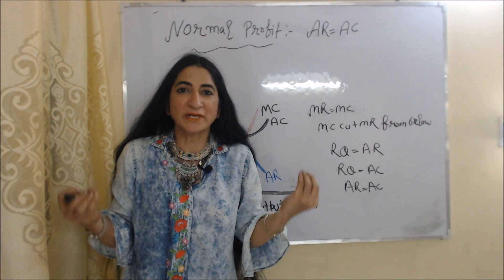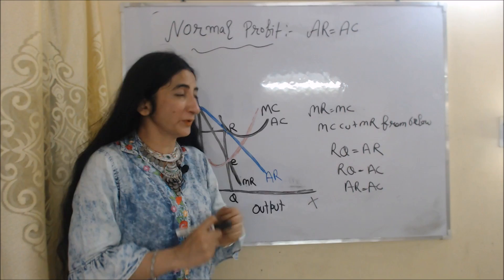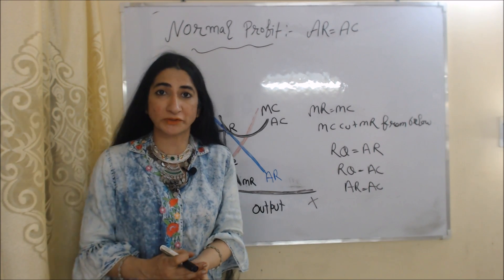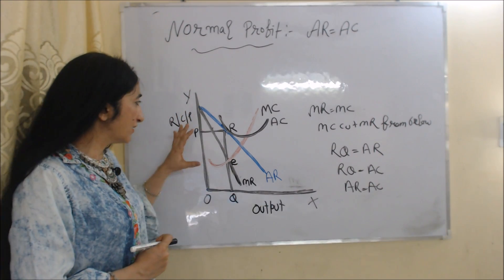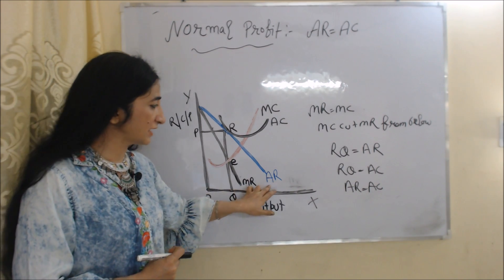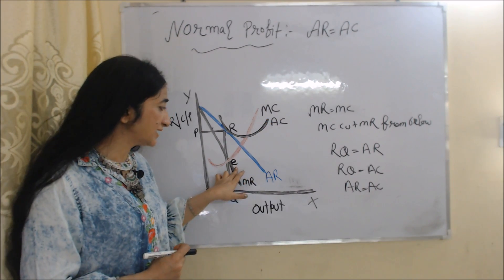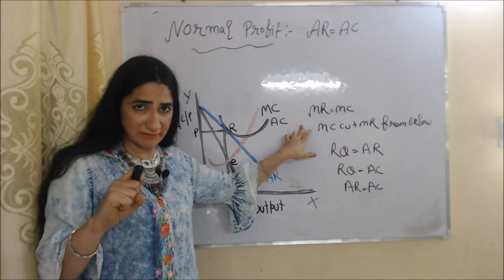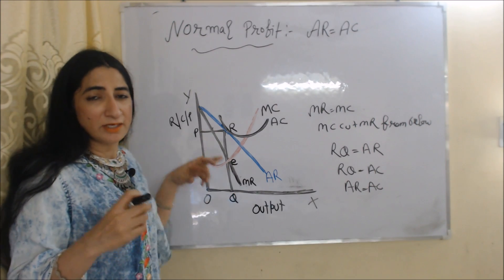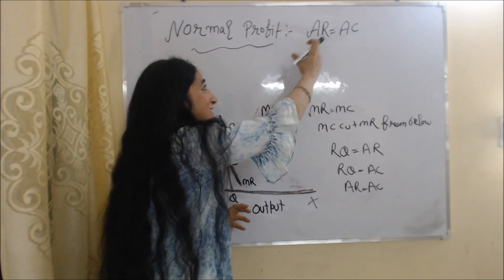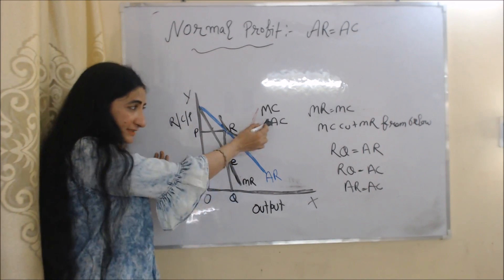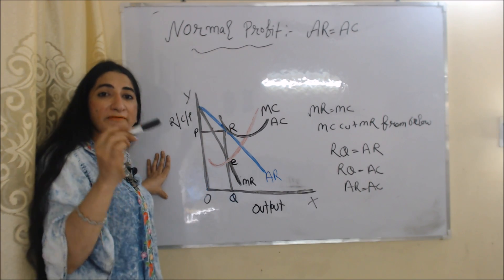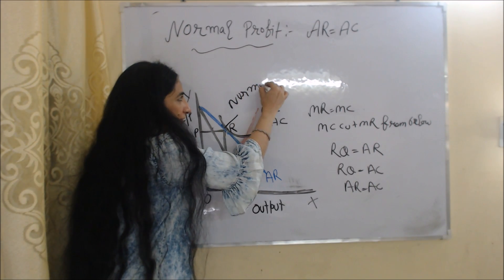A firm gets normal profit when AR is equal to AC — that is, when per unit revenue equals per unit cost. In this diagram, the X-axis has output and the Y-axis has revenue, cost, and price. We have the MR, AR, AC, and MC curves. E is the equilibrium point where MR equals MC and MC cuts MR from below. OQ is equilibrium output and OP is equilibrium price. The firm gets normal profit where AR equals AC — at point R, which touches both the average revenue and average cost curves. This point R is our normal profit point.